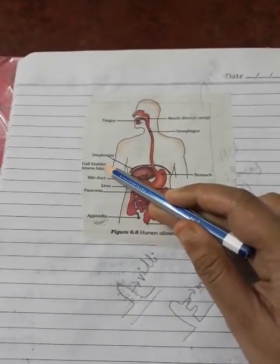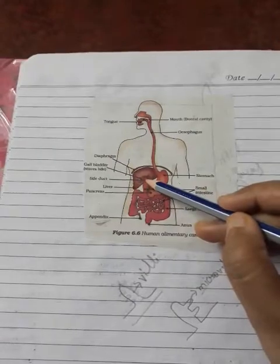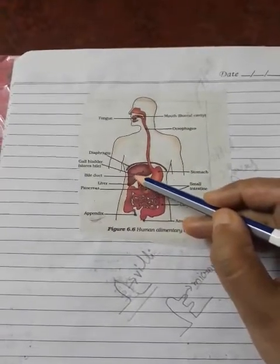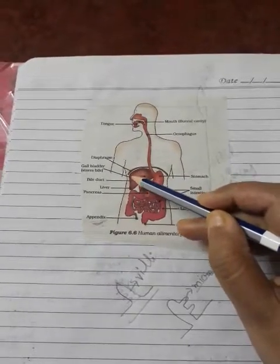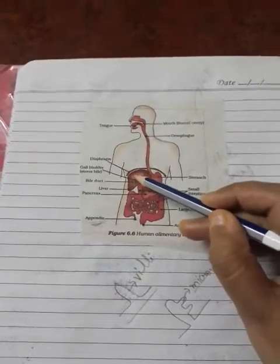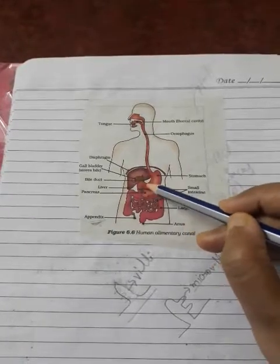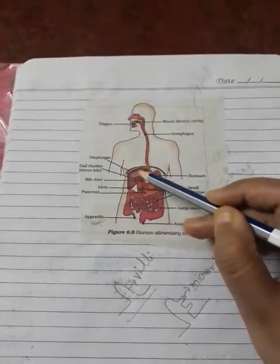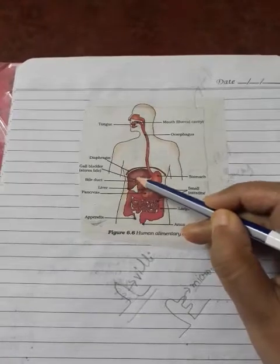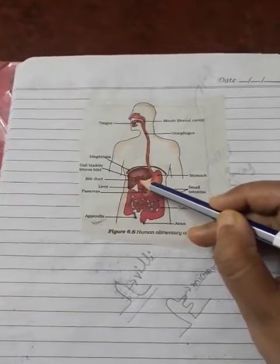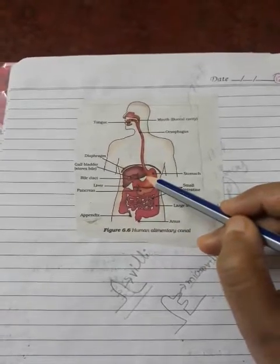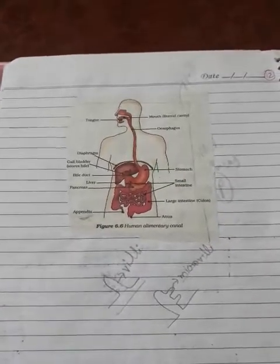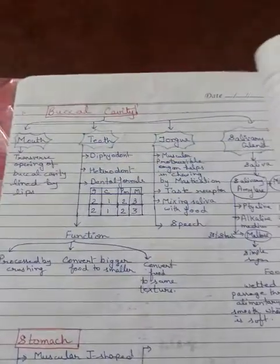You can see the gallbladder mentioned here. The gallbladder is an organ present inside the liver. Whatever bile juice is produced by the liver does not come into the duodenum directly; it is stored in the gallbladder for some time, and from time to time it is secreted into the duodenum part of the small intestine.